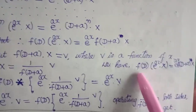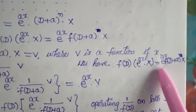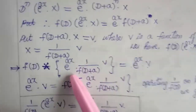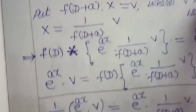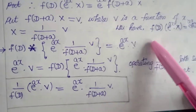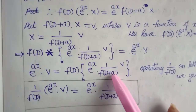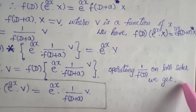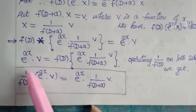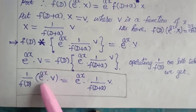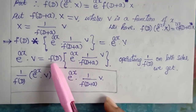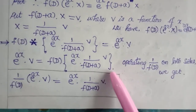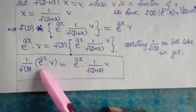Considering the previous step: f of D into e^(ax) into χ equals e^(ax) into f of (D plus a) into χ. Wherever we have χ, we substitute it as 1 by f of (D plus a) into v. Then we operate 1 by f of D on both sides. The left hand side becomes 1 by f of D into e^(ax) into v, and f of D cancels on the right, giving us e^(ax) into 1 by f of (D plus a) into v. This is the formula to find the particular integral when the RHS is a product of an exponential and a function v.